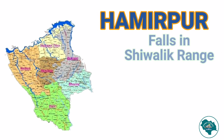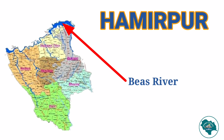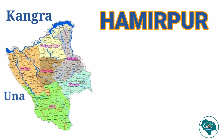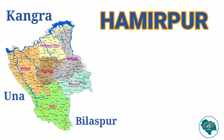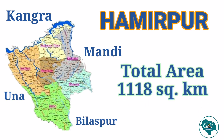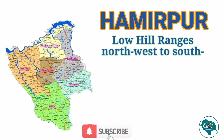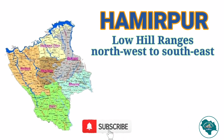Hamirpur falls exclusively in the Shivalik range. In the north, the district is bounded by the river Beas, which separates it from Kangra district. In the west lies Una district and in the south, Bilaspur district. In the east, Sirkhat separates it from Mandi district. It has a total area of 1118 square kilometers. Hamirpur has many low hill ranges which run in a north-west to south-east direction.